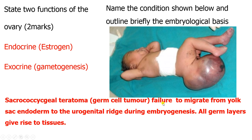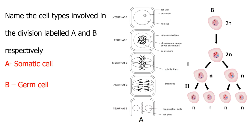A sacrococcygeal teratoma is a germ cell tumor that occurs during the pre-fertilization events. Germ cells are the regenerative cells that form the sperm and the ovum. These tumors arise from failure of migration of primordial germ cells from the yolk sac endoderm to the gonadal ridge. If they fail to migrate, they get stuck within the wall of the yolk sac and grow into tumors of multiple cell lines — ectoderm, mesoderm, and endoderm. Meiotic division occurs in germ cells (gametes), while mitotic division occurs in somatic cells.